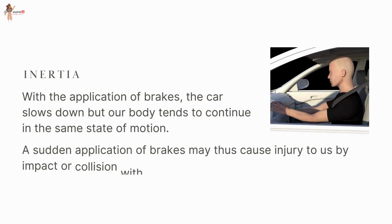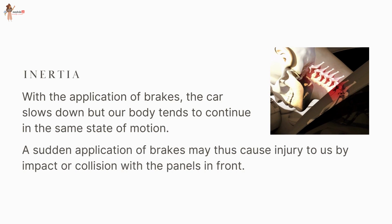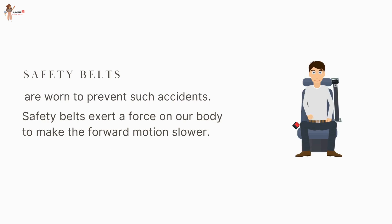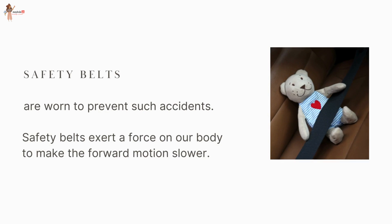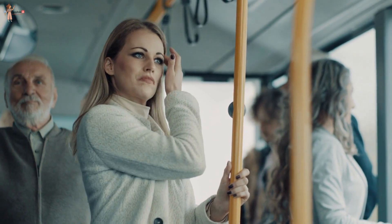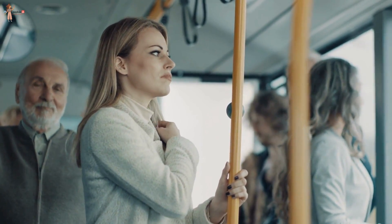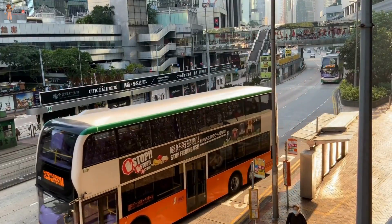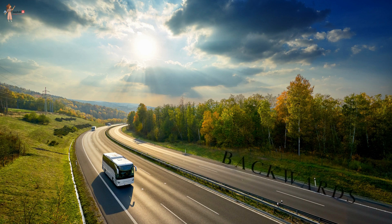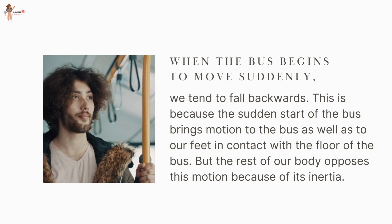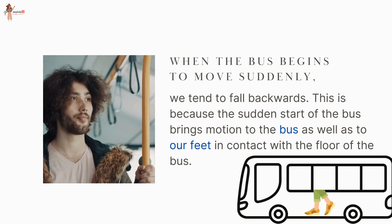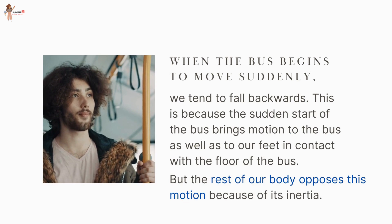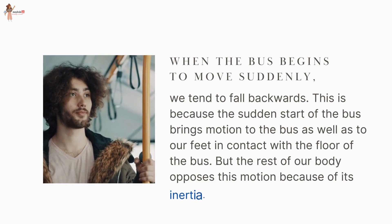A sudden application of brakes may cause injury by impact or collision with the panels in front. Safety belts are worn to prevent such accidents — they exert a force on our body to make the forward motion slower. An opposite experience is encountered when we are standing in a bus and it begins to move suddenly. We tend to fall backwards because the sudden start brings motion to the bus and our feet, but the rest of our body opposes this motion because of its inertia.